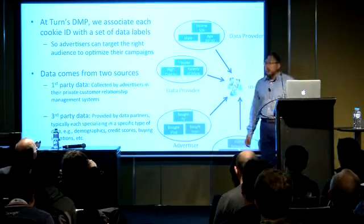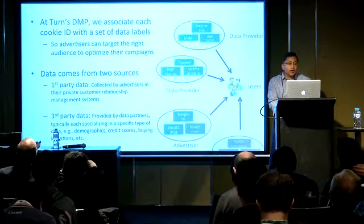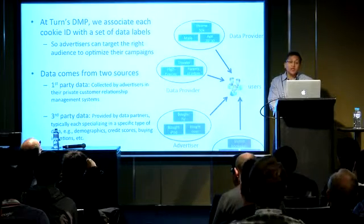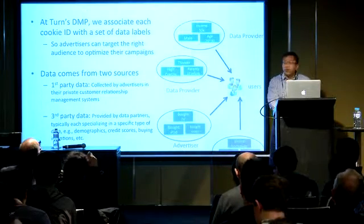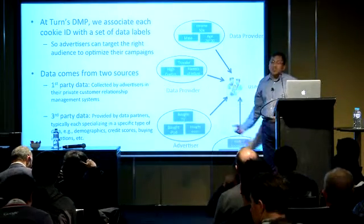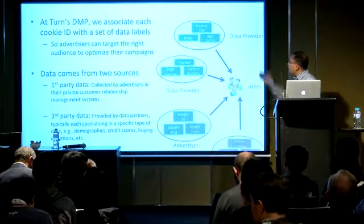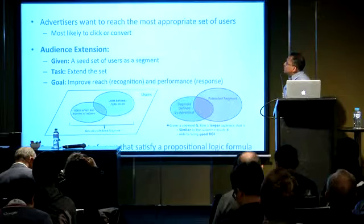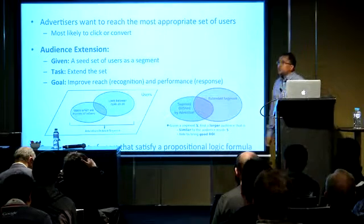Advertisers can use this data to target the right audience and optimize the campaign. The data can come from two sources. Sometimes it is first party data or advertiser private data, such as their own CRM data, purchase data, or homepage visit data. A large part of the data comes from other sources like third party match partners or data providers specializing in demographics, credit score, travel intention, or credit card purchase intention. These are the building blocks of audience targeting.